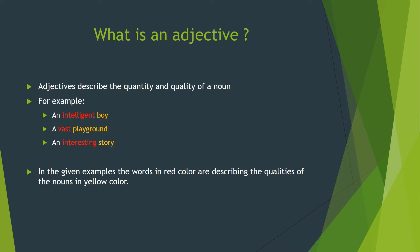Adjectives tell us something about a noun. For example, 'an intelligent boy' — here 'boy' is a noun and 'intelligent' is its quality, so 'intelligent' is the adjective. 'A vast playground' — 'playground' is the noun and 'vast' is its quality, so it is an adjective. 'An interesting story' — 'story' is the noun and 'interesting' is its quality, so 'interesting' is the adjective.